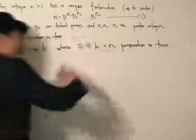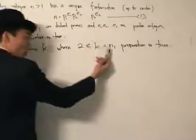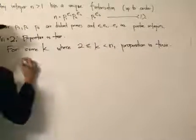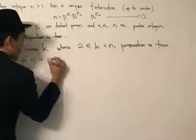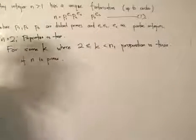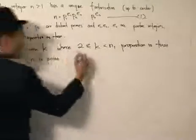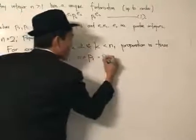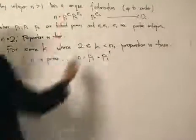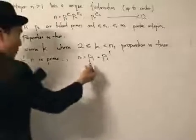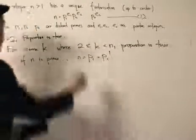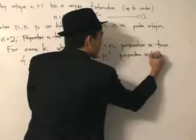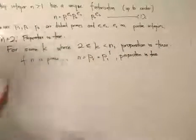Now we will go on by showing that the proposition is true, focusing on n. The induction hypothesis will come in later in the argument. If n is prime, we can simply write n equals that prime number — it equals p1, which is p1 to the power of 1. Since a prime number can only be divided by itself and 1, the proposition is true for n when n is prime.